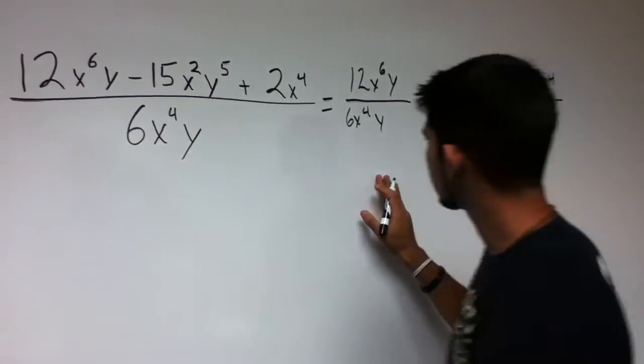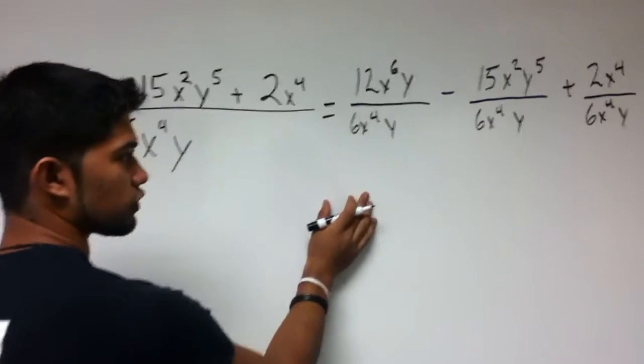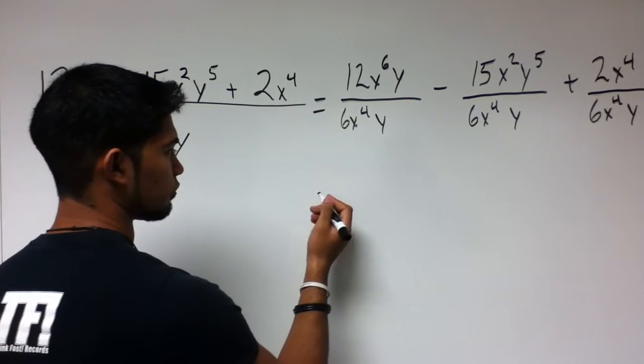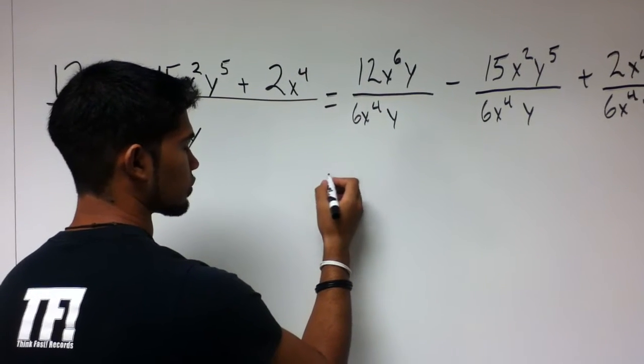From here, we break down each one into smaller pieces so we can see what cancels out to help us simplify the expression.